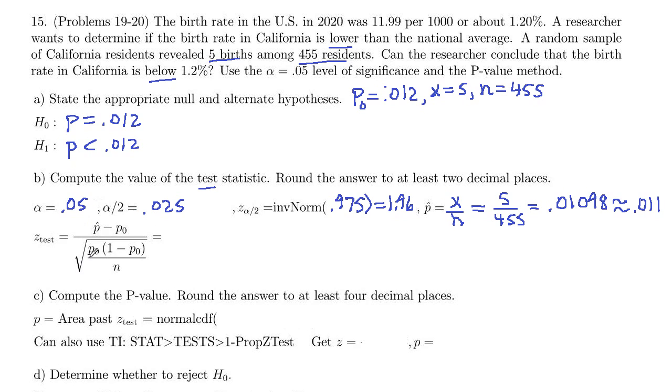Our test statistic, I included the formula for that. So our p-hat is the 0.011 minus our hypothesized value is the 0.012. And in the denominator, square root, and we'll use the p₀ in there, 0.012, 1 minus 0.012, and then we're dividing by n, which was 455.